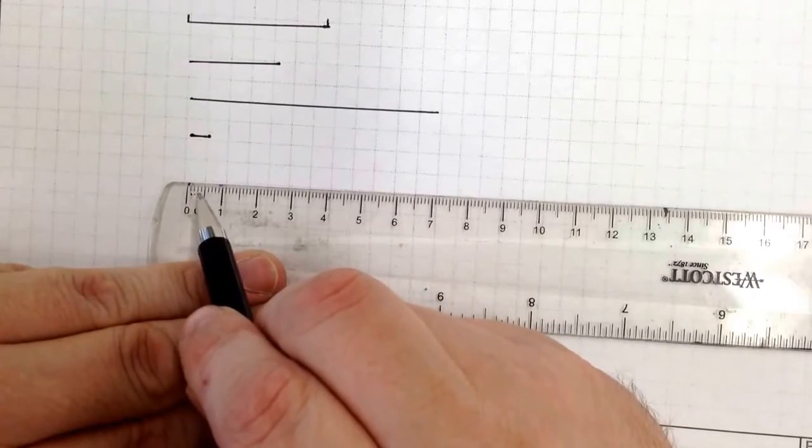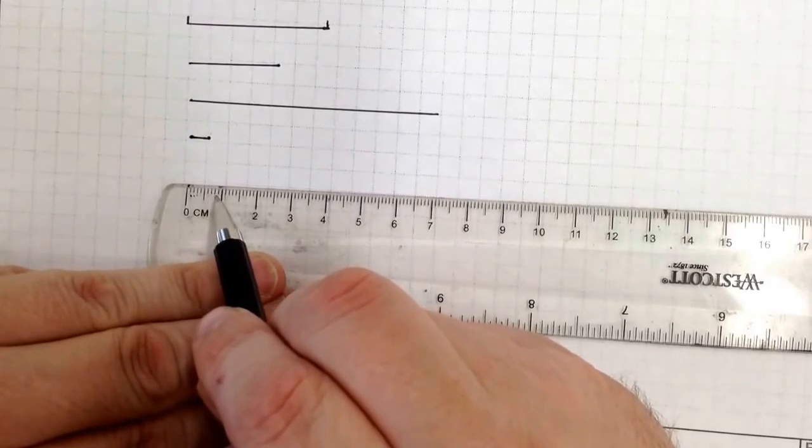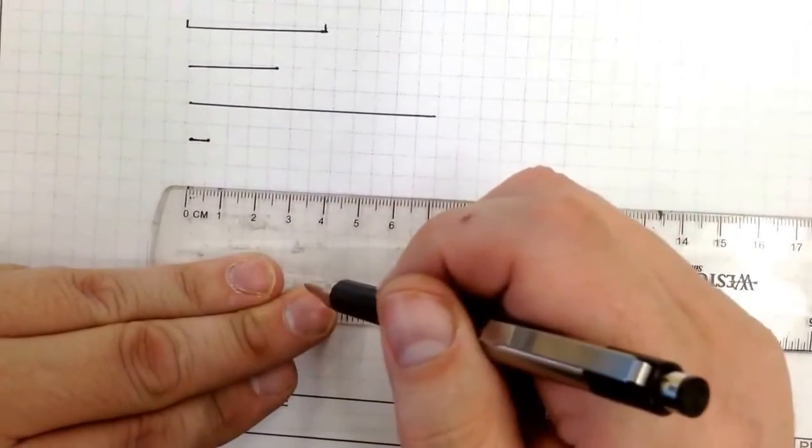So if I count these, one, two, three, four, five, six, seven, eight, nine, ten. So ten millimeters in every single centimeter.